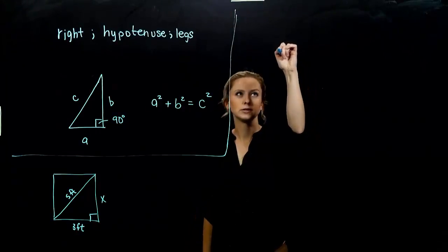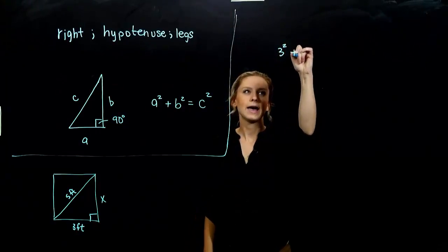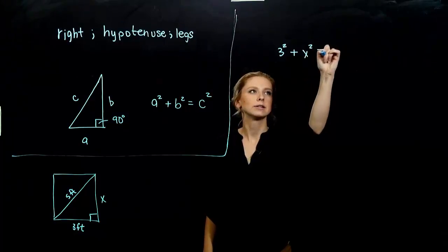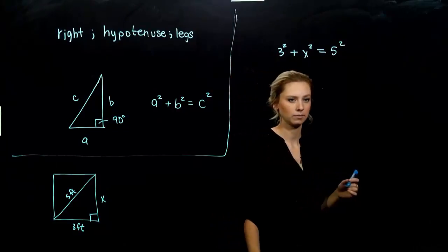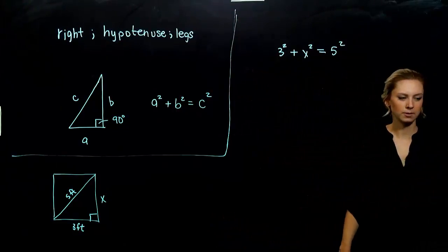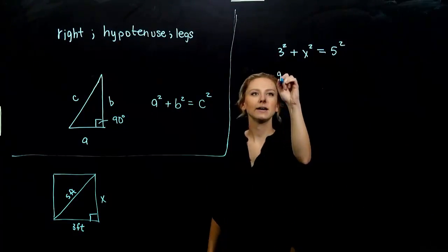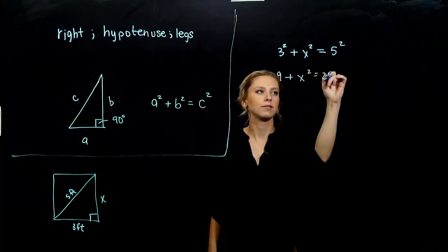If I square the first leg, three, and add it to the square of the second one, what is that going to equal? Five squared, the hypotenuse squared. Let's start to evaluate. I've got 9 + x² = 25.